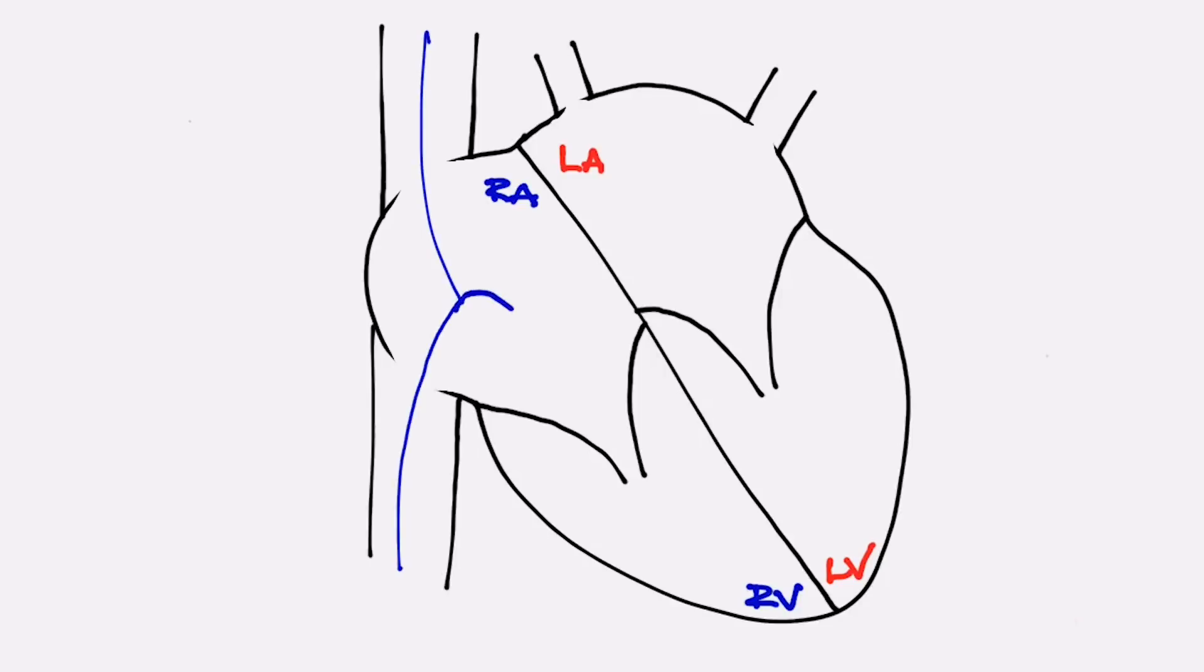The blue blood or venous blood or deoxygenated blood coming back from the body enters the two big veins and drains into the top chamber on the right called the right atrium. It then flows through a valve into the bottom chamber called the right ventricle.